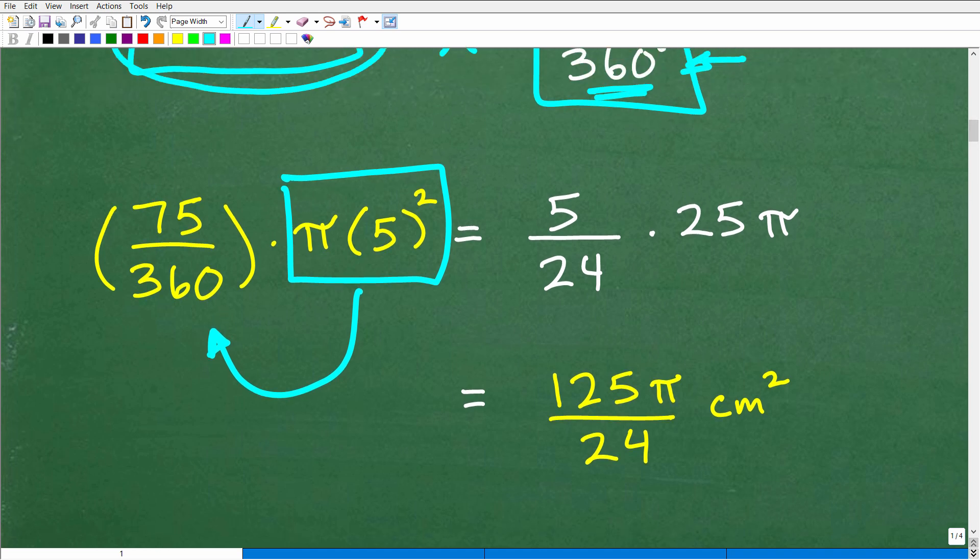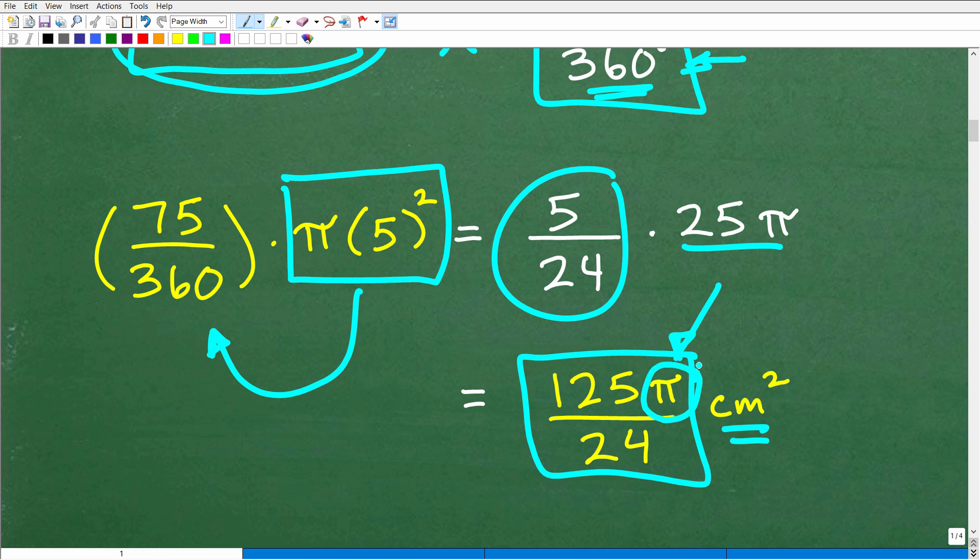So this is going to be 5 over 24 times 25π. And when we do that, we can just leave our answer like this, 125π over 24 centimeters squared. Now, I'm doing this problem this way because I want to show you that it's perfectly acceptable. Matter of fact, it's almost recommended sometimes that you leave that π in your answer.